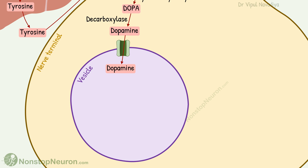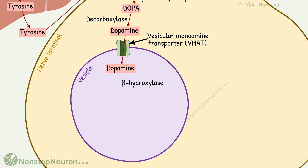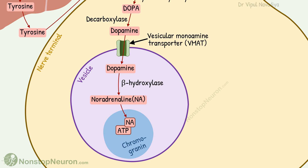In the nerve terminal, synaptic vesicles take up the dopamine via a carrier protein called vesicular monoamine transporter, or VMAT. Inside the vesicles, an enzyme called dopamine beta-hydroxylase converts dopamine into noradrenaline — notably, noradrenaline is synthesized inside the vesicle. The noradrenaline is then complexed with ATP and adsorbed onto a protein called chromogranin, where it is stored until release.